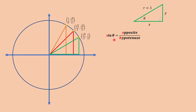For sine theta, that would be opposite over hypotenuse. This is equal to y over r. Since this is the given angle theta, the opposite side is y and the hypotenuse is r. Simplifying, we can have y over 1 because we know that r is equal to 1. Therefore, sine theta is equal to y.